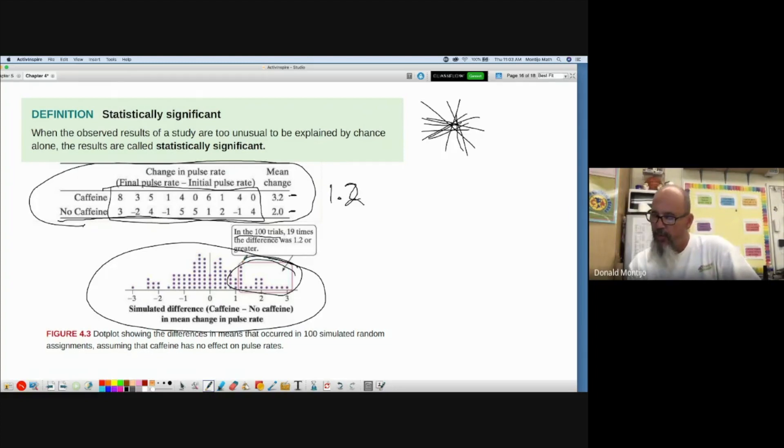Therefore, this is pretty common to happen even if there is no difference. We would say that this difference of 1.2 is pretty common. Therefore, it is not statistically significant because it's very plausible to happen just due to random chance.